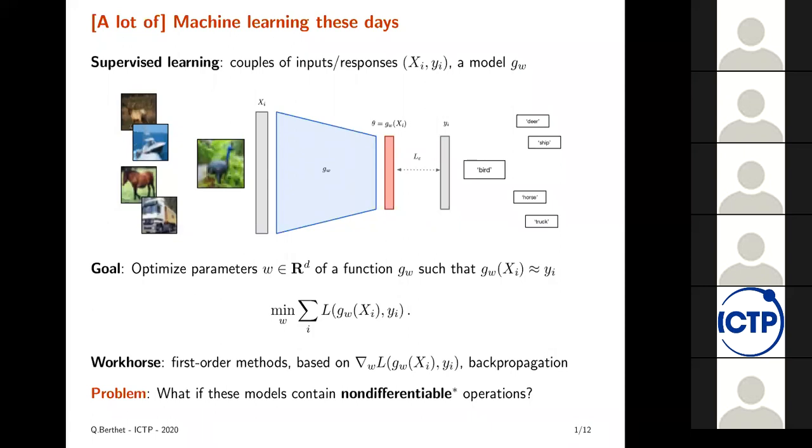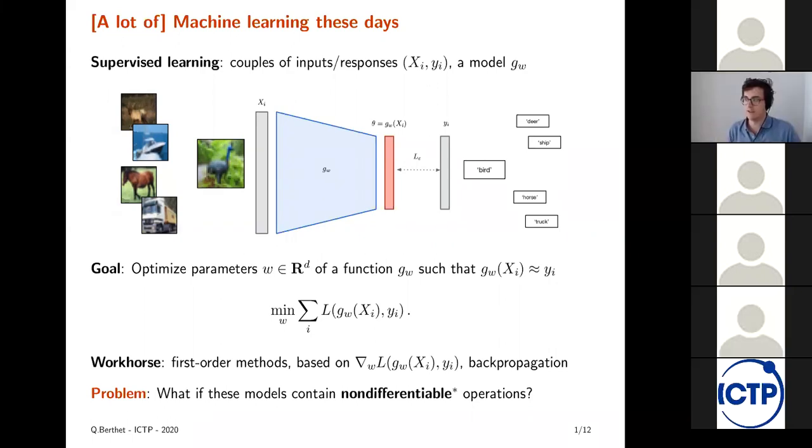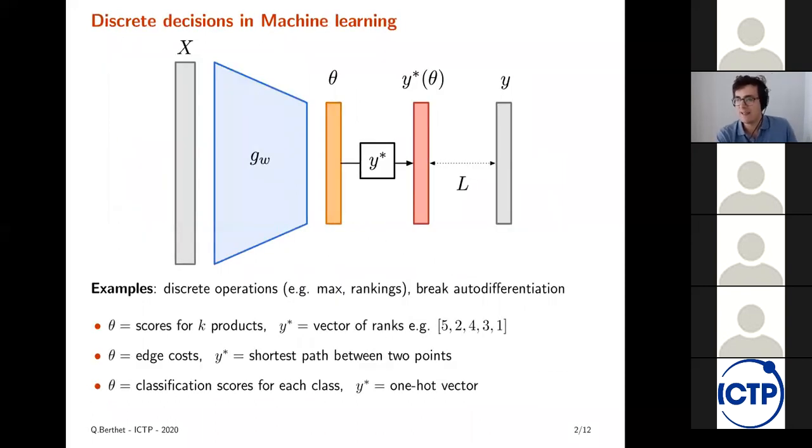And the workhorse of these methods is first order methods. So doing some sort of gradient descent or a variant thereof. And often when the big blue box is a neural network, this is done through back propagation. One of the issues is what happens if these models contain non-differentiable operations. This also includes operations that are piecewise constant. In this case, derivatives would be equal to zero and this can be a bad thing. This can mean that the model will not move at all.